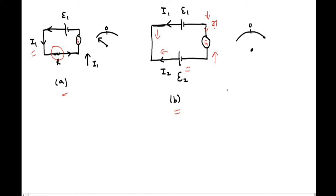If E1 is greater than E2, then current I1 will obviously be larger than I2. The resultant current, which will be I1 minus I2, will be in the direction of I1. So the current will flow in the upward direction in the galvanometer, and the galvanometer will show deflection in the leftward direction.